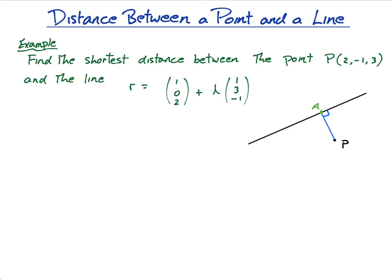But the dot product of what? It would be the dot product of vector PA — I'm going to go with PA as it'll be a little bit easier. So PA dot the direction vector, which is (1, 1, 3, -1) — this vector dot this vector must equal zero. Let's write this down: vector PA dot the direction vector (1, 3, -1) equals zero.